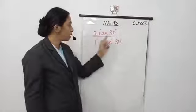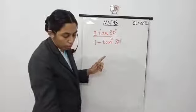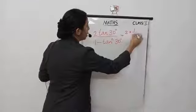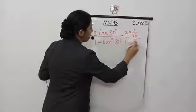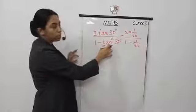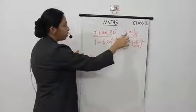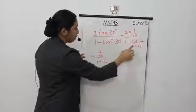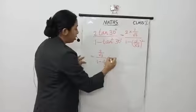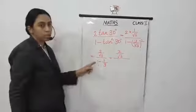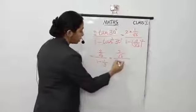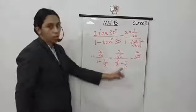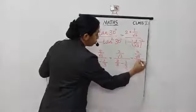Sub-question 4: 2 tan 30° divided by 1 minus tan² 30°. Substitute tan 30° = 1 by root 3. So this is equal to 2 into 1 by root 3, divided by 1 minus 1 by root 3 all squared. This gives 2 by root 3 divided by 1 minus 1 over 3 — root 3 squared is 3. Make the same denominator: 1 is 3 by 3, so 3 by 3 minus 1 by 3 gives 2 by 3 in the denominator.